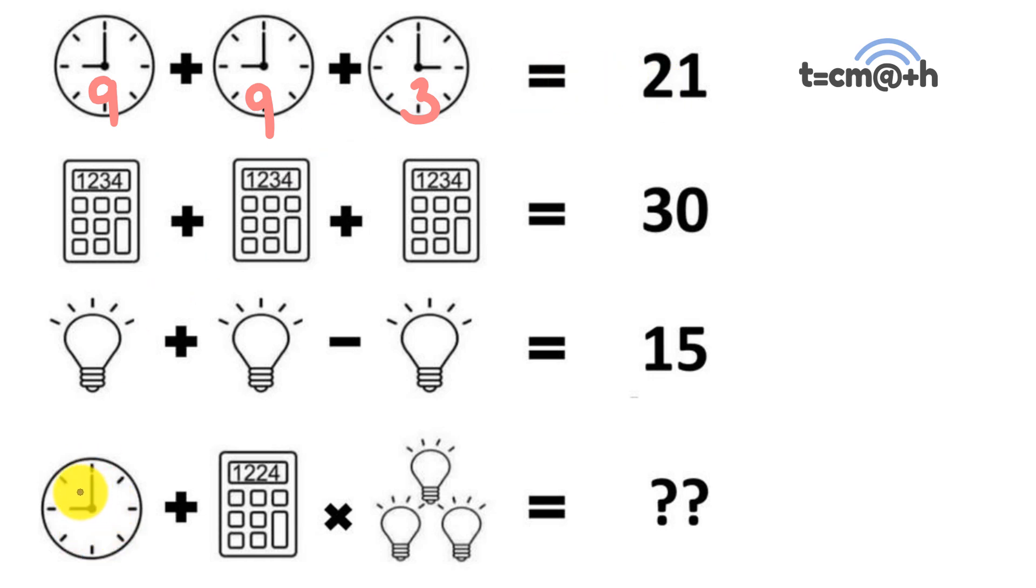So when we go down to here, what we're really looking at is what time is it on the clock, and that will give us our number. We're looking at nine o'clock, so this number down here is a nine.